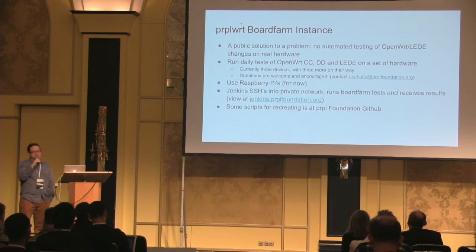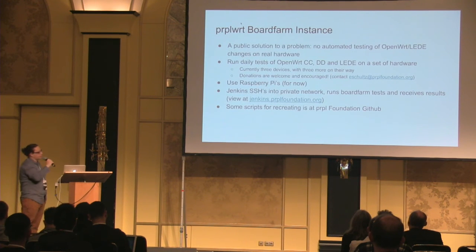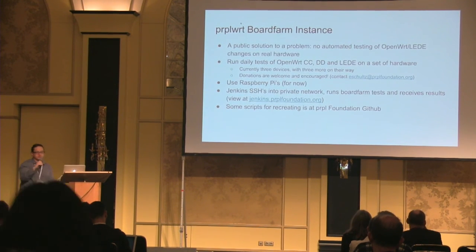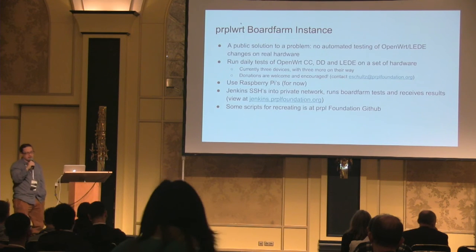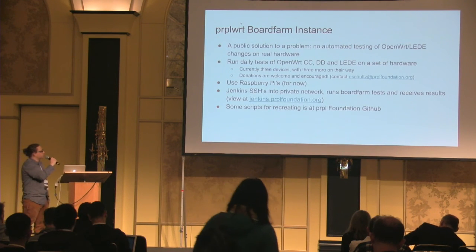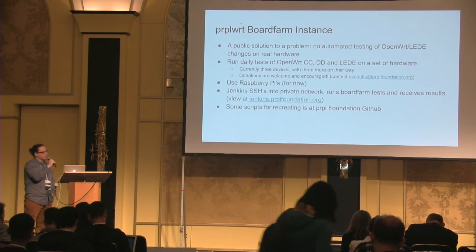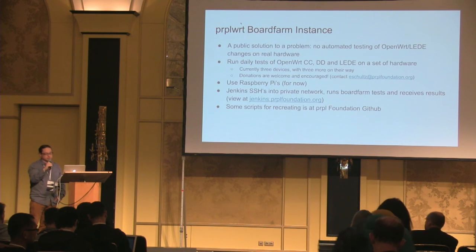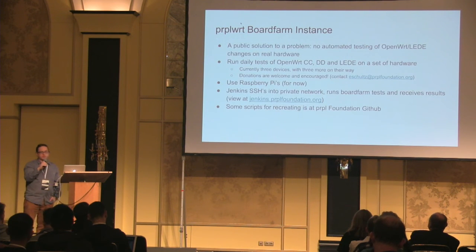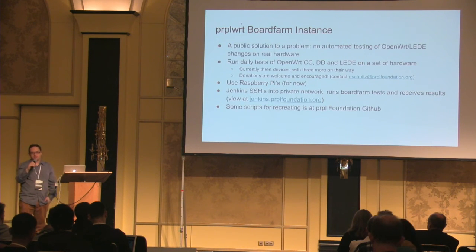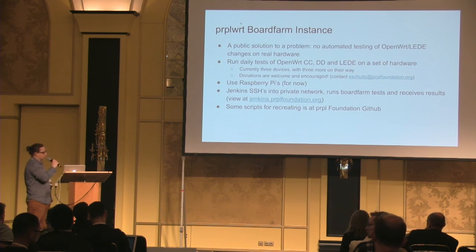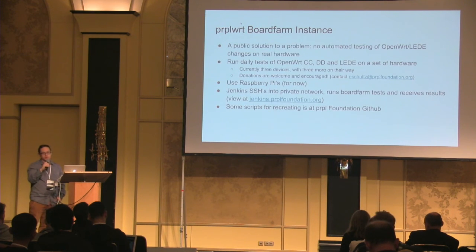Jenkins SSH's into a private network, they host the boards, run the board farm tests, and receive the results. You can view these results at jenkins.purplefoundation.org. Scripts for recreating this setup are available at the Purple Foundation GitHub, and they encourage people to check it out and improve upon it.